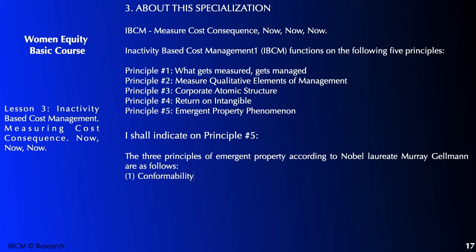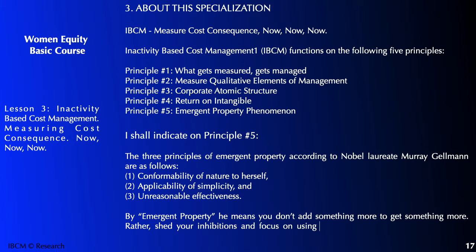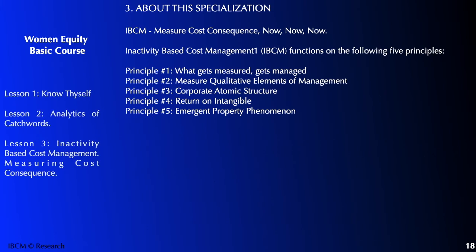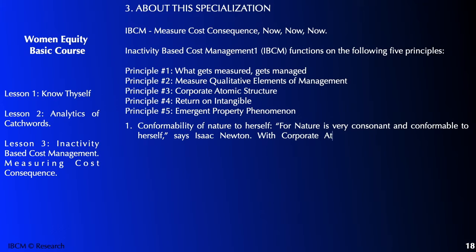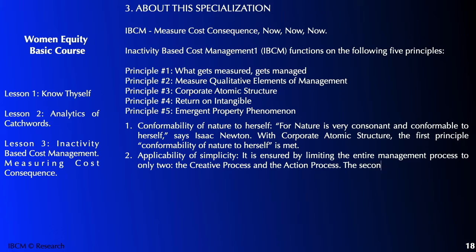The three principles of emergent property, according to Nobel Laureate Murray Gell-Mann, are as follows. One: conformability of nature to herself. Two: applicability of simplicity. Three: unreasonable effectiveness. Emergent property means you don't add something more to get something more — rather, shed your ambitions and focus on using your ethical assets. Emergent property is corporate yoga. Conformability of nature to herself: as Isaac Newton said, 'nature is very consonant and conformable to herself.' When we cooperate on structure, the first principle is met. Applicability of simplicity is ensured by limiting the entire management process to only two: the creative process and the action process.